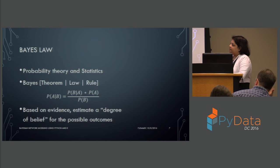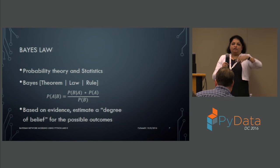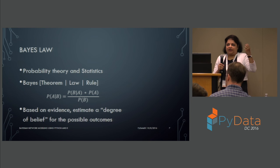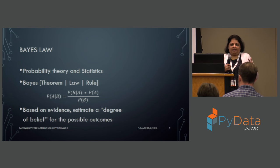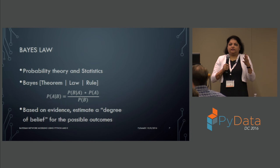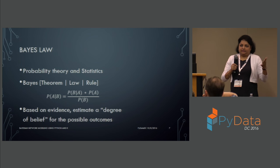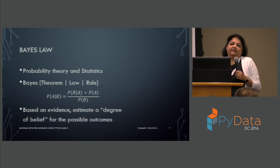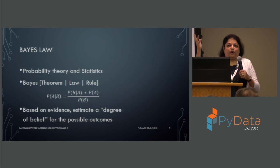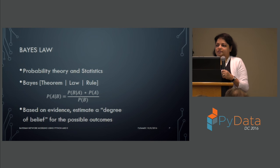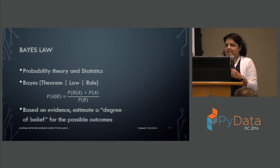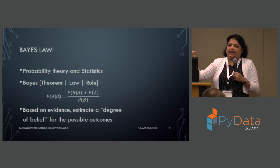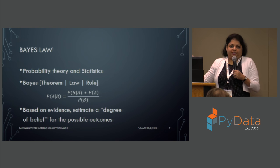Essentially, based on evidence — the data that you have — you're trying to come up with a degree of belief for the possible outcomes. Going back to my example, the outcomes could be: is the distance of the galaxy at redshift 0.1, or 0.2, or 0.3? After applying Bayesian networks, I get an understanding of how much I can believe — from the data I have — that the distance is 0.1, 0.2, or 0.3. I get specific numbers for that.